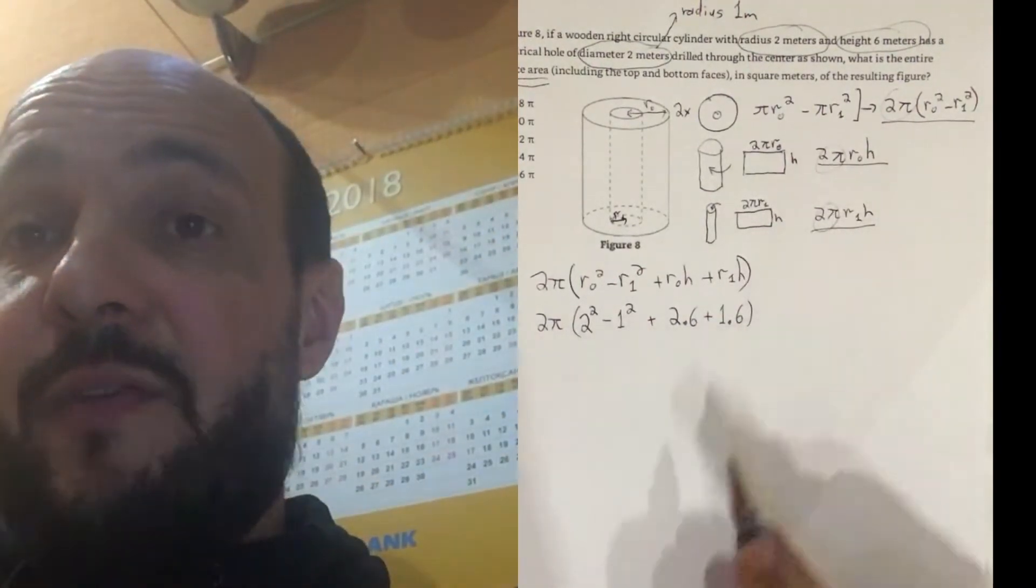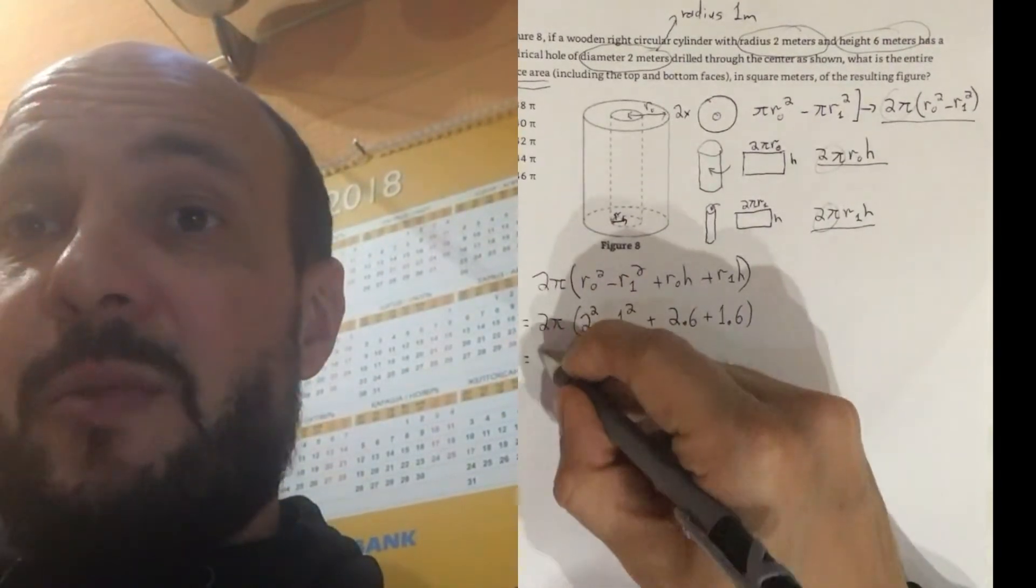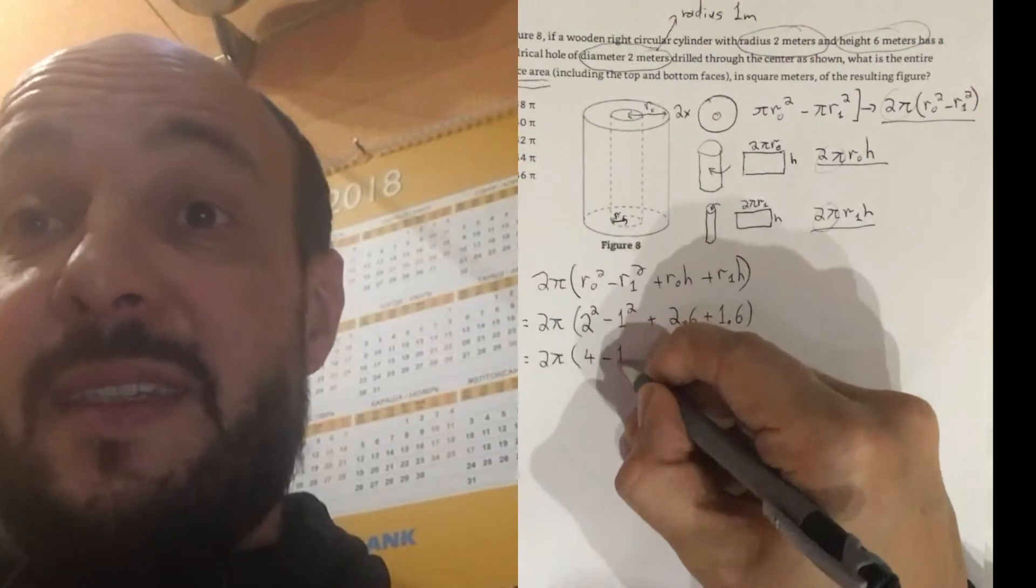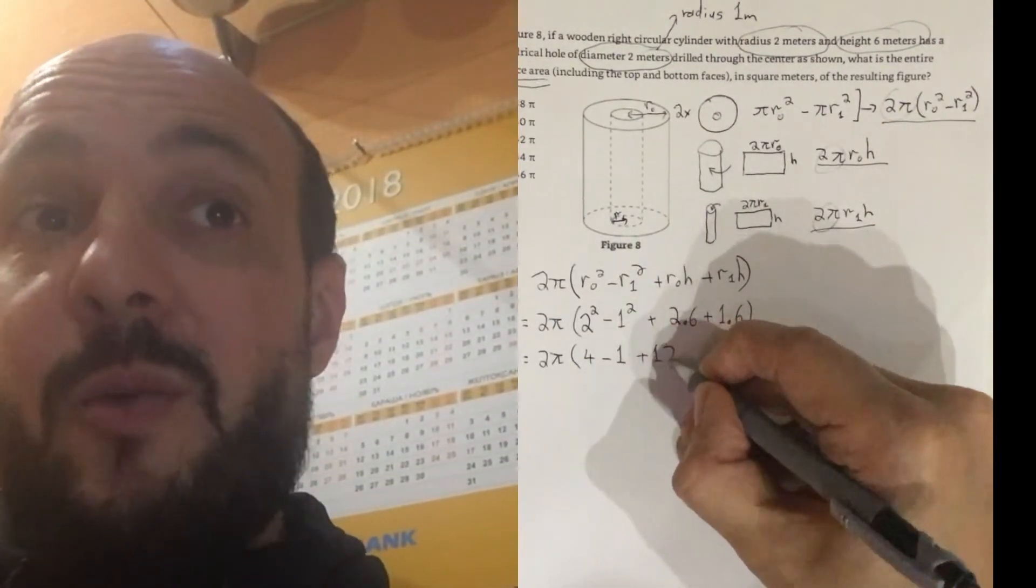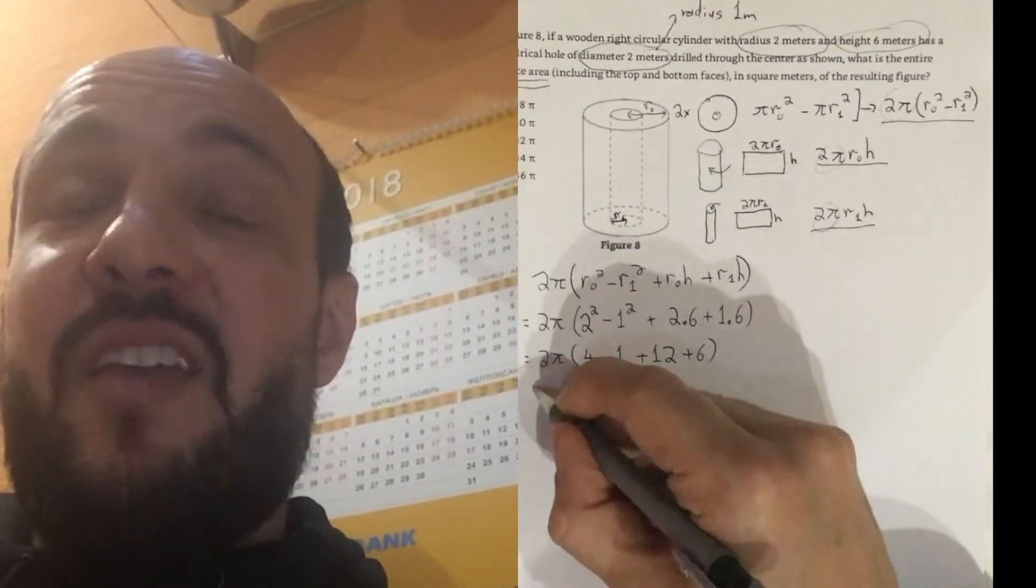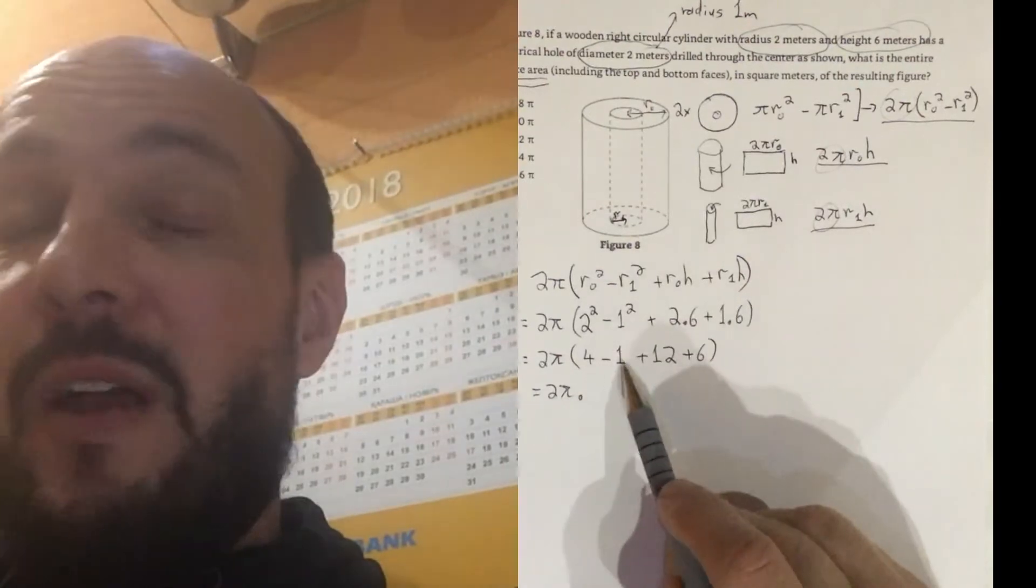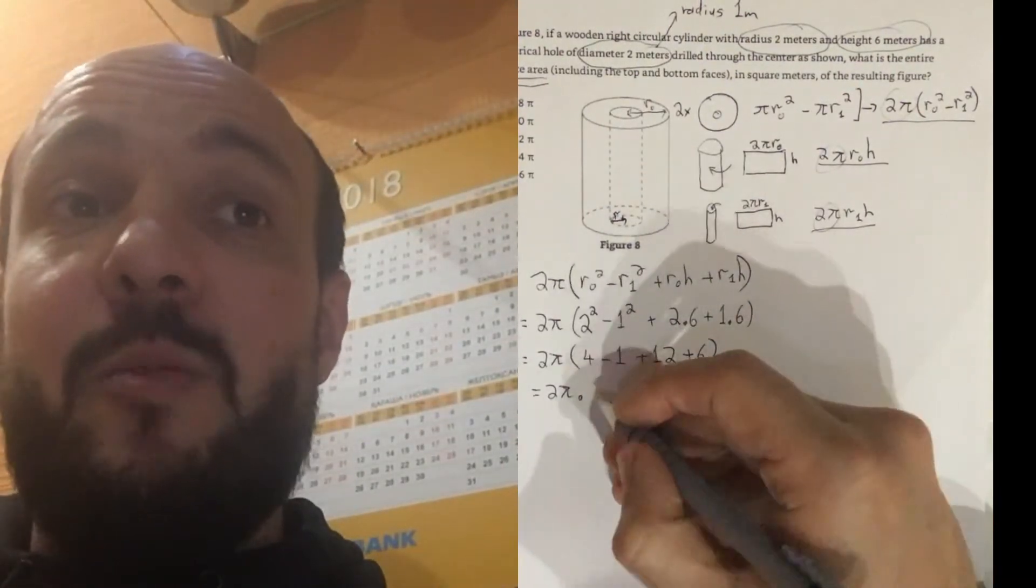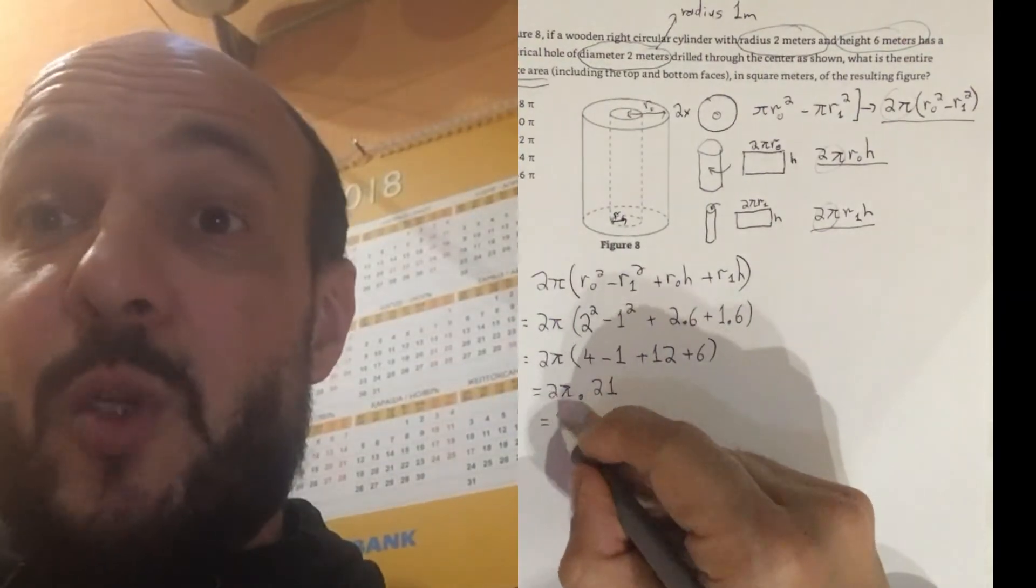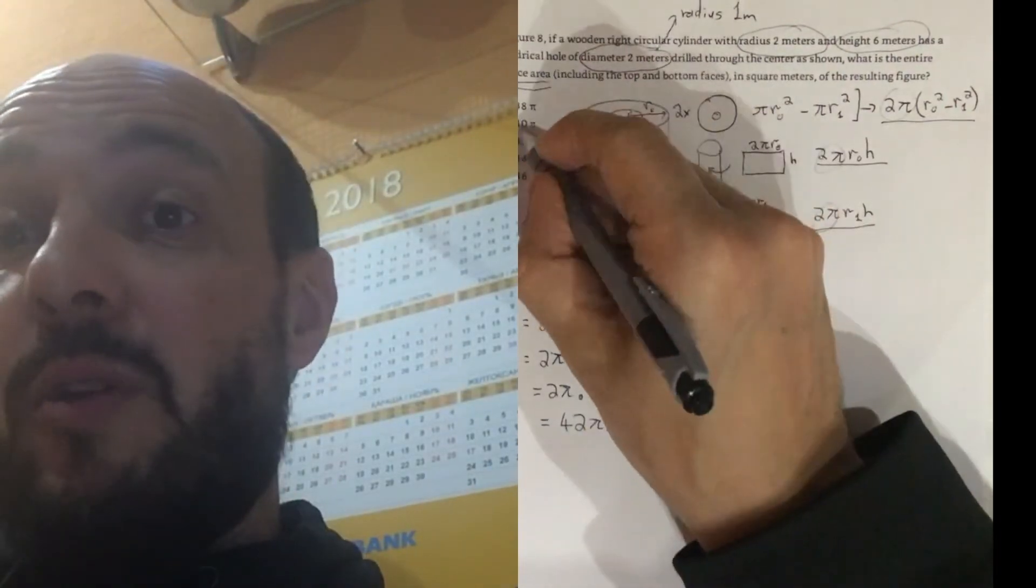Once we put all our numbers into the formula, we simply have an arithmetic exercise. You do have a calculator with you in the SAT, so you could use the calculator, but I think with 2s and 1s and 6s, this is quite simple. 2 squared is 4, 1 squared is 1, 2 times 6 is 12, and 1 times 6 is 6. And if we add those together, 4 minus 1 is 3, plus 12 is 15, plus 6 is 21. So we end up with 2 pi times by 21, which gives us 42 pi, which is answer C from our multiple choice answers, so QED.